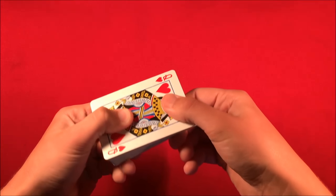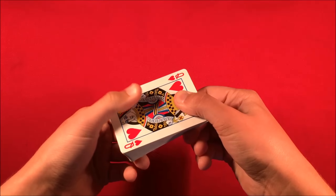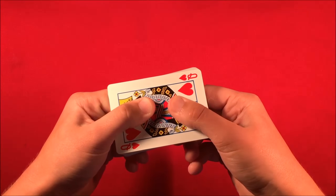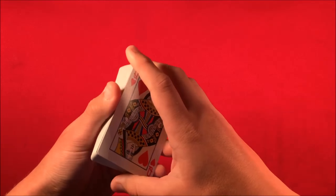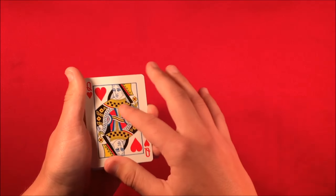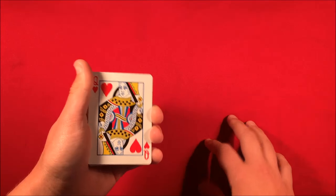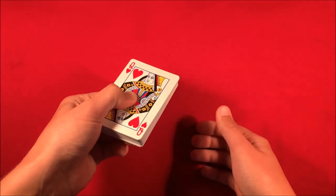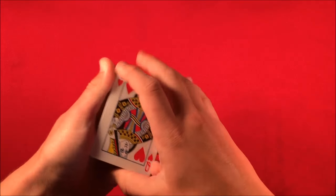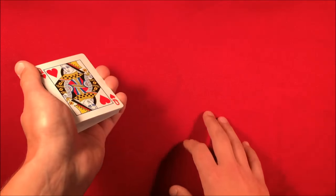So at this point, you can tell the spectator, okay, go ahead and sign this card. And basically at this point, what you want to do is apply pressure downwards to kind of where the tape is, so this way the card sticks to the double-back card. So at this point, if you want, you can hand the deck over, you can have them sign the card, or you can just hold it and let them sign it.